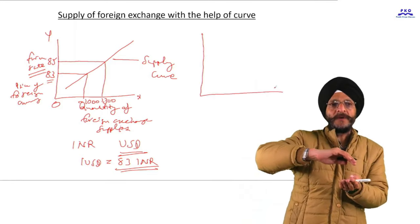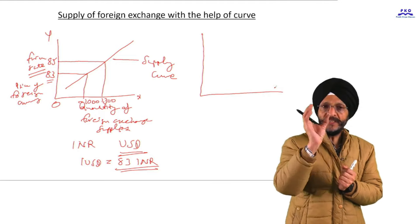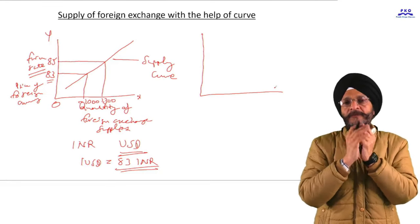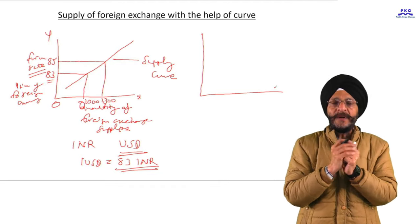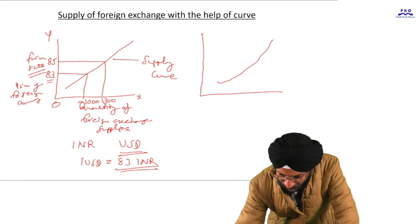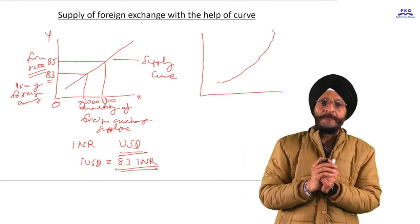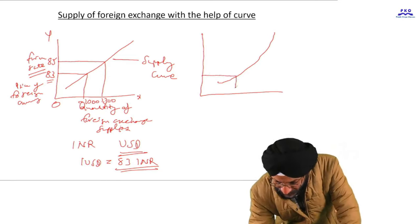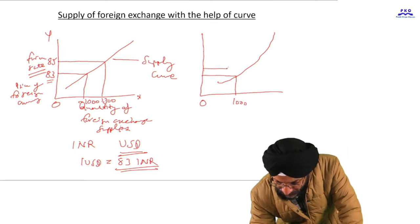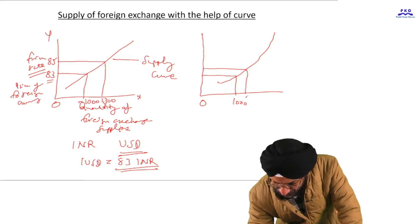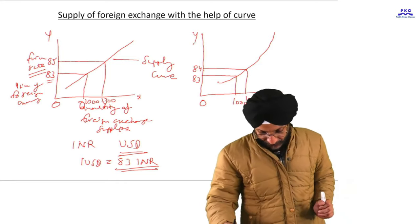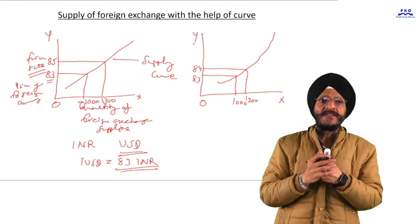Though we draw it as a straight line for simplicity to illustrate the direct relationship, in actual reality the supply curve may take the form of a curve. At a price of 83, the quantity may be 1000; at 84, it may be slightly more. The actual supply curve is not a straight line but a curve.